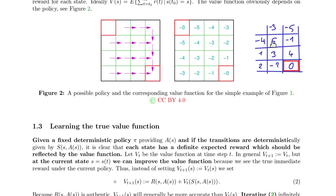We fix a policy and try to learn the value function by placing the agent randomly in different states and seeing how it adapts. For example, the agent is placed in a state with value five and moves right to a state with value minus one, receiving a reward of minus one on the way. It's quite obvious the value of that state cannot be five if you move into a state with value minus one and receive a punishment of minus one.